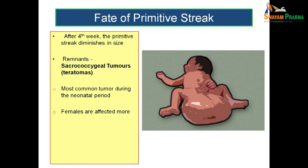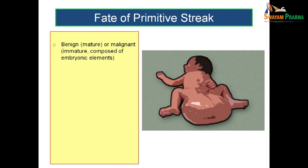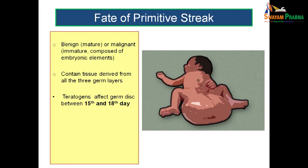Females are affected more compared to males and the ratio is 4:1. The teratoma can be either benign (mature) or malignant (immature). The immature ones are composed of embryonic elements. The word teratoma means it contains tissues derived from all three germ layers. Teratogens mainly affect the germ disc between the 15th and 18th day of intrauterine period, so the primitive streak and notochord are affected the most.